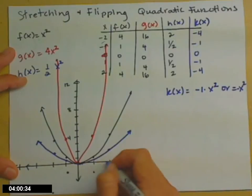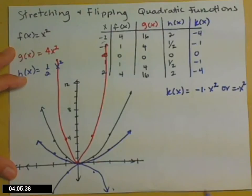(1, -1), (2, -4). So a negative leading coefficient flips us upside down.